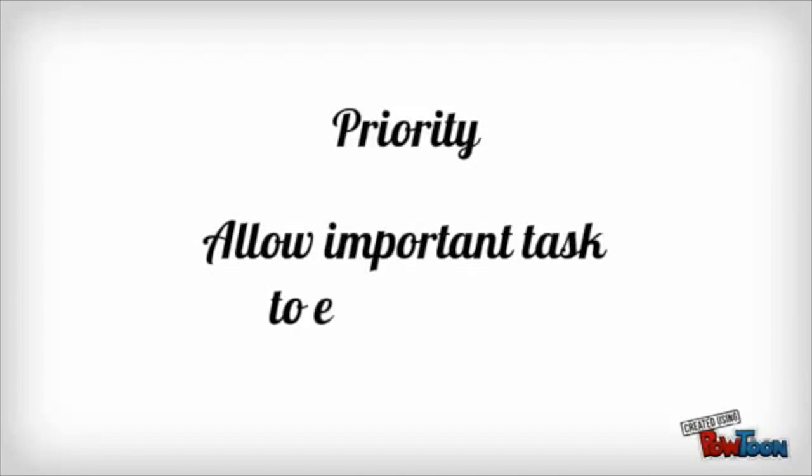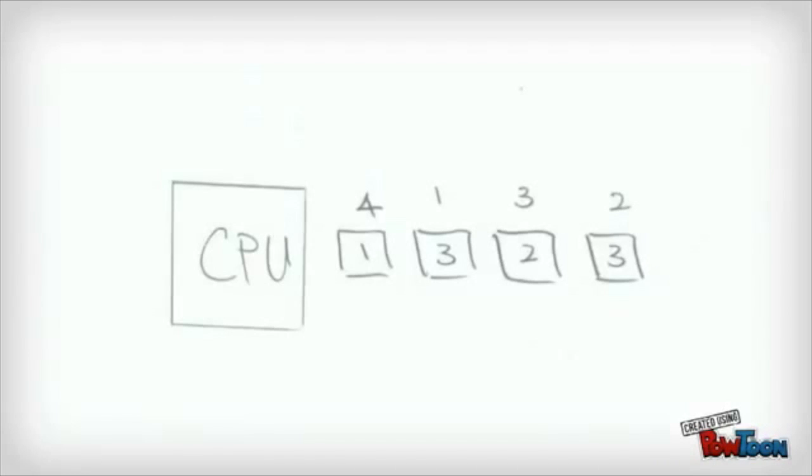Priority. Priority is the act of giving the privilege for usage of resource for a process with higher priority. Priority is set differently by different operating system. As you can see in the diagram, the number in the box represents the priority and the number above represents the running order. So as you can see, the process with higher priority is run first and if there is two or more processes with the same priority, they will go back to first come, first serve and see which process came first.